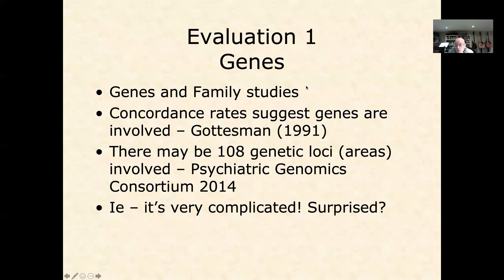The first way of evaluating the theory is to say this is a biological approach — an explanation to do with raised and lowered levels of dopamine. One pretty obvious thing that could cause higher or lower levels of dopamine is genes. So if we could say people with schizophrenia have genes that actually cause higher or lower levels, causing schizophrenic symptoms, then that would support the theory.